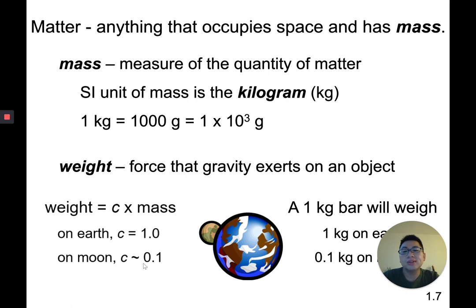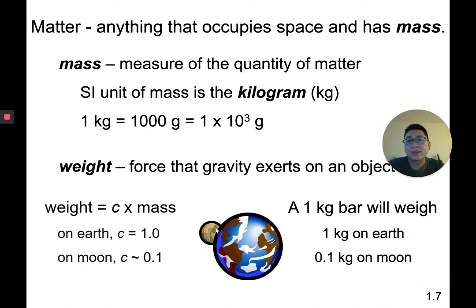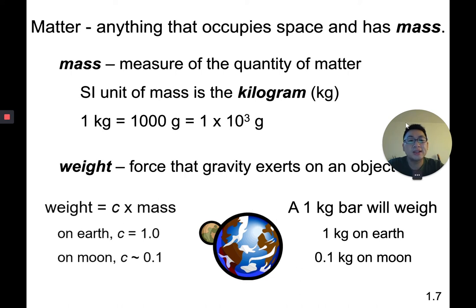Since the Moon's gravitational force is about a tenth of that on Earth, a one-kilogram bar would weigh about a tenth as much on the Moon. That's why on the Moon you could lift what would be considered more massive things, because the gravity pulling down on it is significantly less.